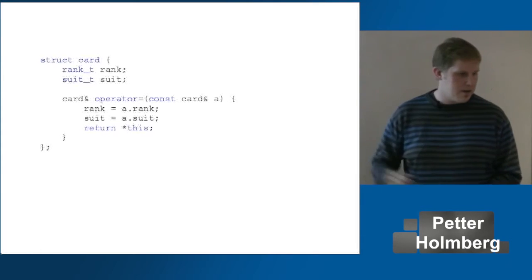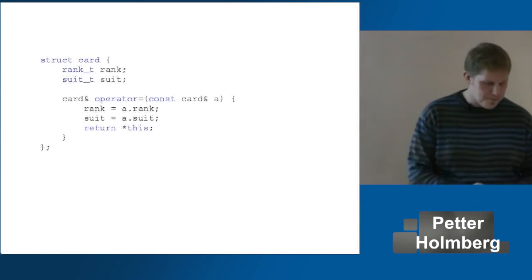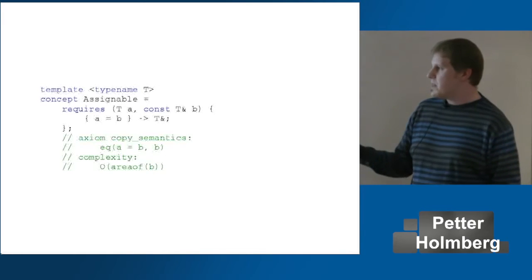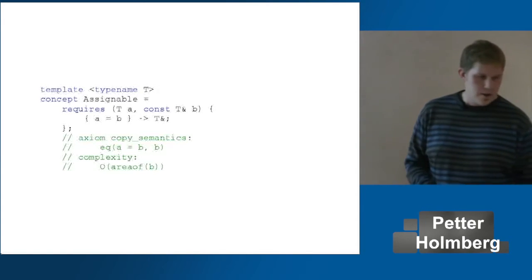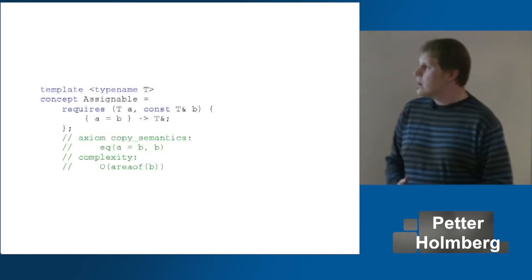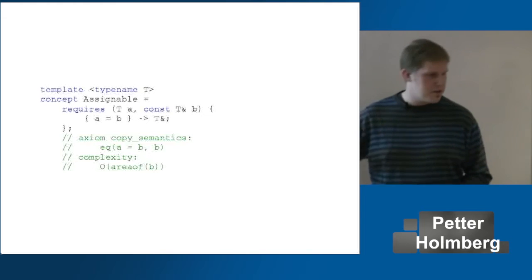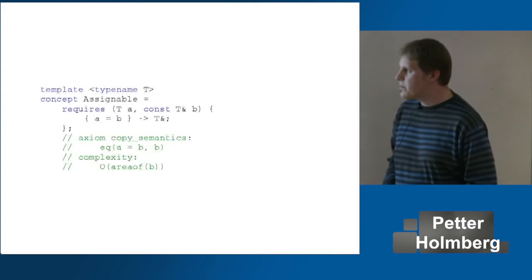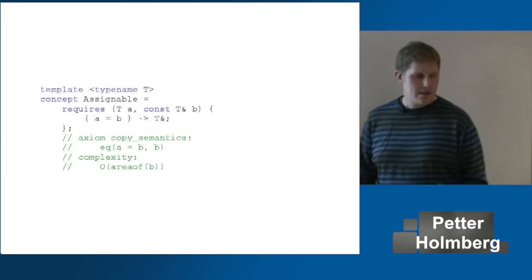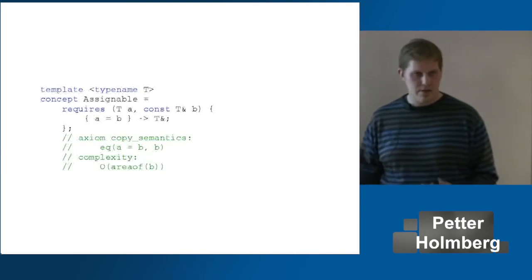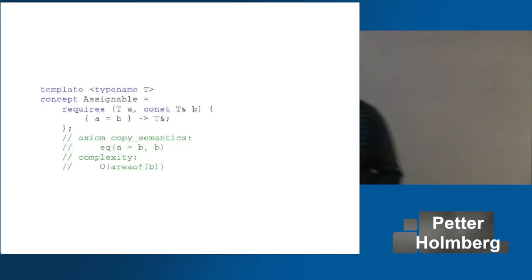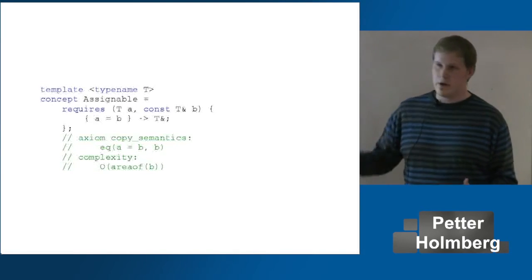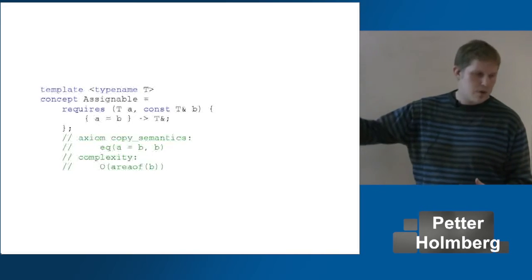I'm going to call the concept 'assignable'. You can also use the `requires` keyword inside of a concept — this is called a requires expression. All it's saying is: given two objects, `a` and `b`, `a` of type T and `b` of type `const T&`, then this expression inside the braces has to be a valid expression for these objects with a return type that is `T&` or convertible to `T&`. In other words, we need a copy assignment operator, or a simple built-in type that already has copy assignment defined by the language.